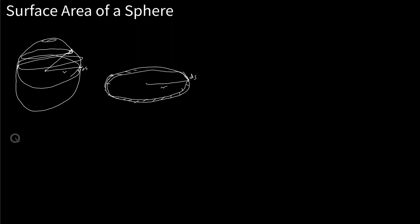The surface area of the sphere is twice the surface area of the hemisphere. And the surface area of the hemisphere is going to be the integral — because we're going to add up all the minuscule things — of the circumference of these small circles: 2 pi r sub c. I used r sub c because we already have r here, which is the radius of the entire sphere. So we integrate r sub c, the radius of each circle, times ds — the circumference of the circle times ds — which gives basically the area covered by a single strip.